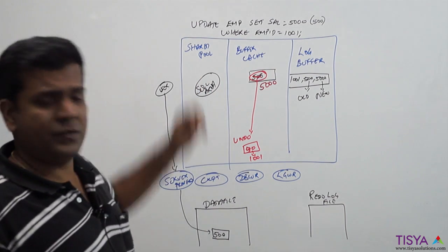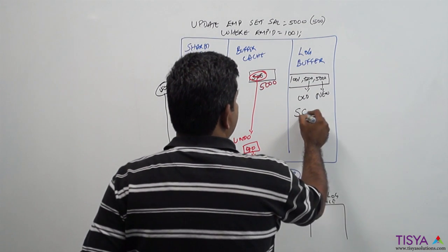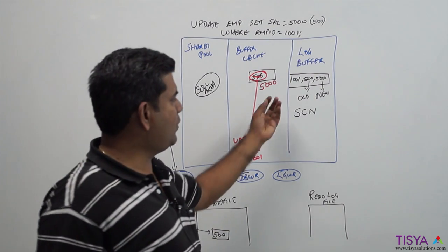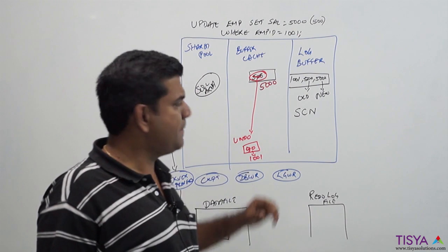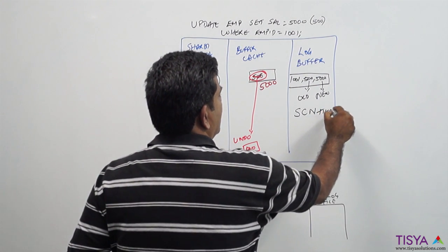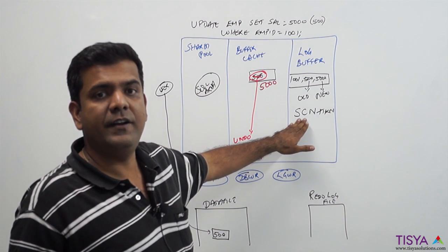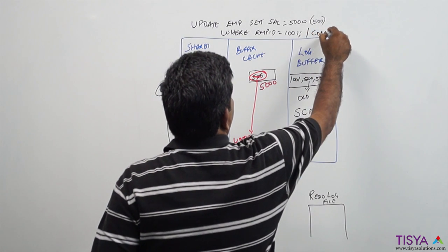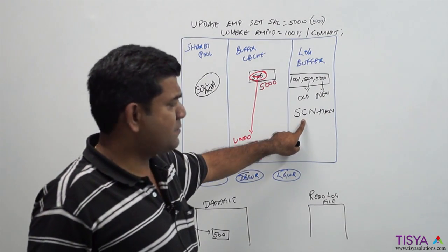Alternatively, the user could also issue a commit. When he issues a commit, every time a commit is made a system change number (SCN) is generated. Along with the transaction ID - every transaction that is started will be having an internal transaction ID - along with an SCN is put into the redo log buffer. This happens when the user issues a commit.